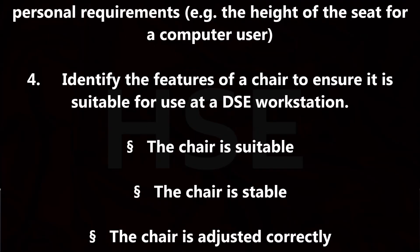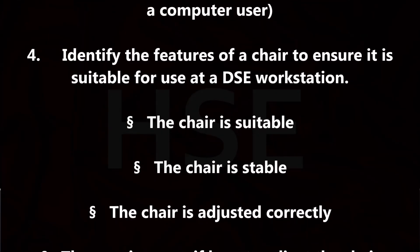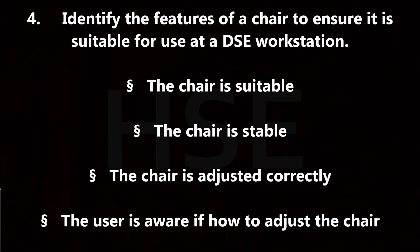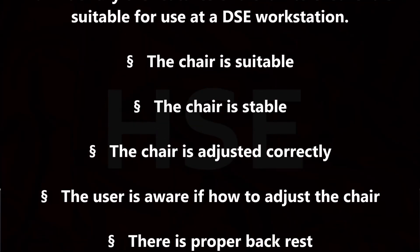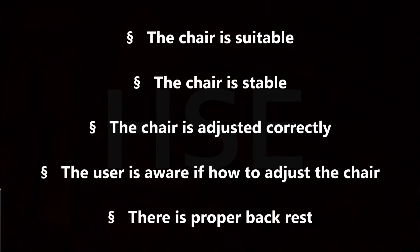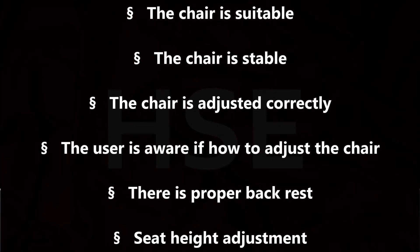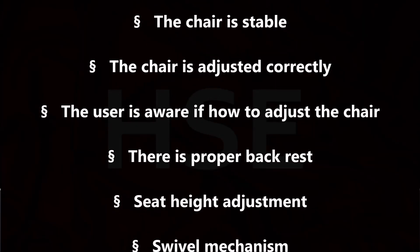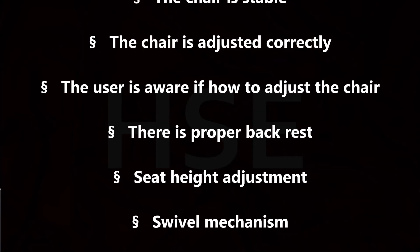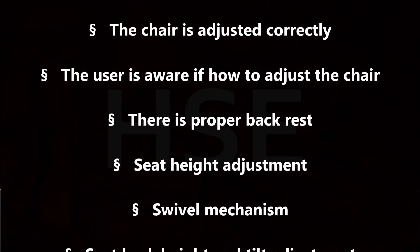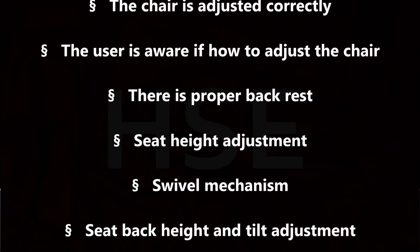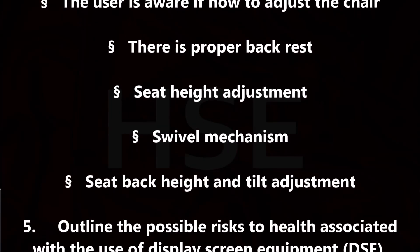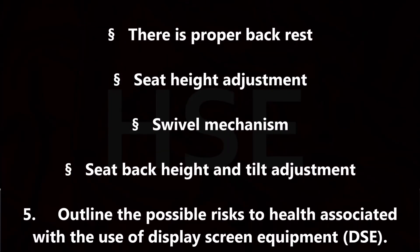Identify the features of a chair to ensure it is suitable for use at a DSE workstation. The chair is suitable and stable. The chair is adjusted correctly and the user is aware of how to adjust the chair. There is a proper backrest. Seat height adjustment. Swivel mechanism. Seat back height and tilt adjustment.